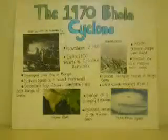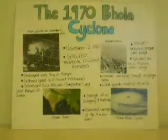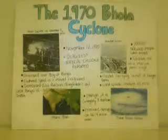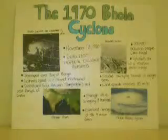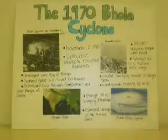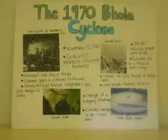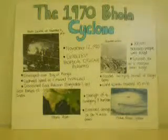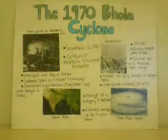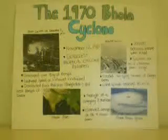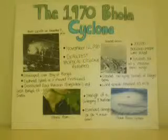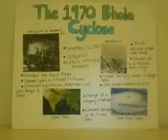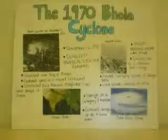The 1970 Bhola Cyclone was the deadliest tropical cyclone ever reported. It occurred on November 12, 1970, and developed over the Bay of Bengal. It gathered speed as it moved northward, devastating East Pakistan — now known as Bangladesh — and West Bengal, India. It killed 300,000 to 500,000 people, with fatalities largely due to a massive storm surge that flooded the low-lying islands of the Ganges Delta. Wind speeds reached 115 miles per hour, the strength of a Category 3 hurricane. Estimated damage was $86.4 million.